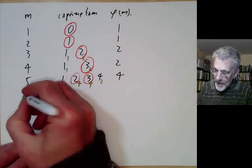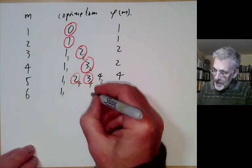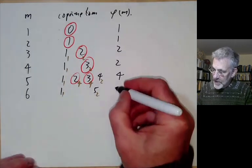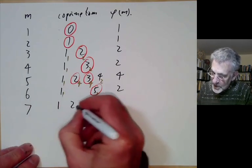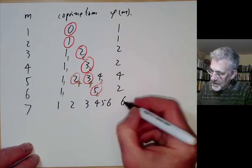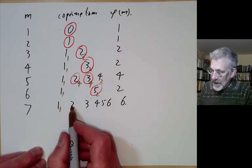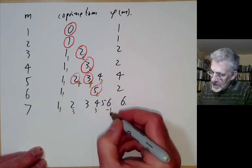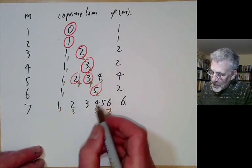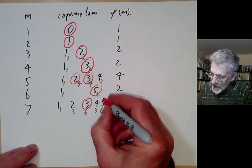For m equals 6, the residue classes coprime to 6 are 1 and 5, which have orders 1 and 2 respectively; phi of m is 2, so there's only one primitive root. For m equals 7, phi of m is 6. The element 1 has order 1; 2 cubed is 8 ≡ 1, so 2 and 4 have order 3; 6 is −1 so it has order 2; and 3 and 5 both have order 6. So there are two primitive roots of 7, namely 3 and 5.